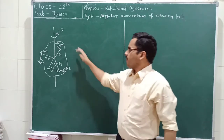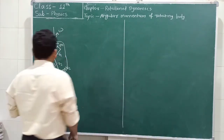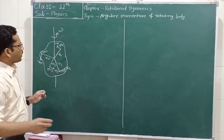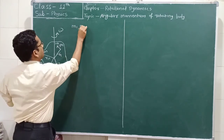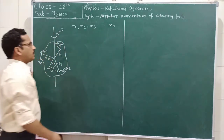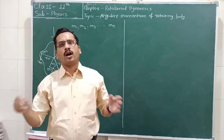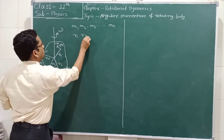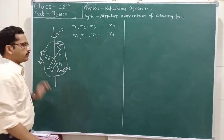For that, we consider a rigid body of any shape. We know that the rigid body is made up of a large number of particles having masses M1, M2, M3 up to Mn. These particles are situated at distances R1, R2, R3 up to Rn from the axis of rotation.